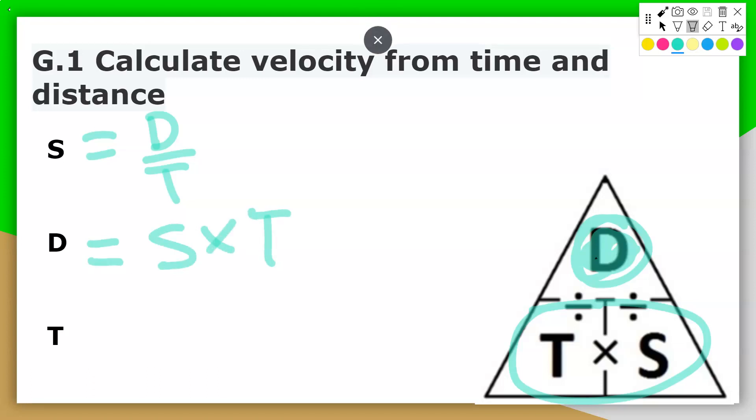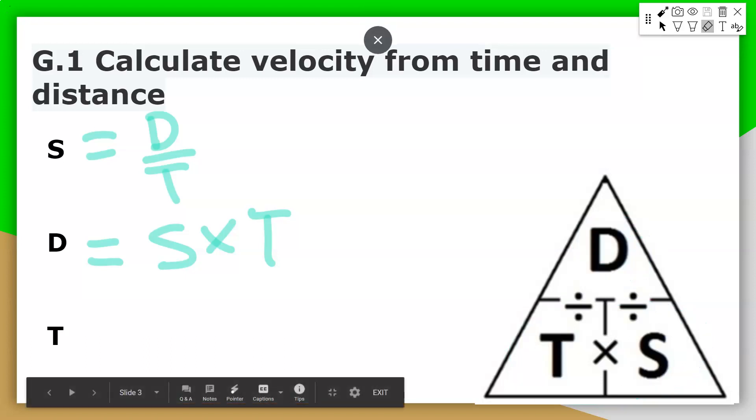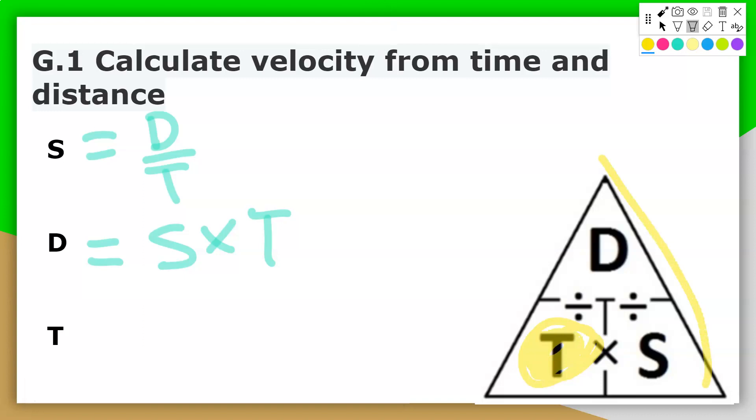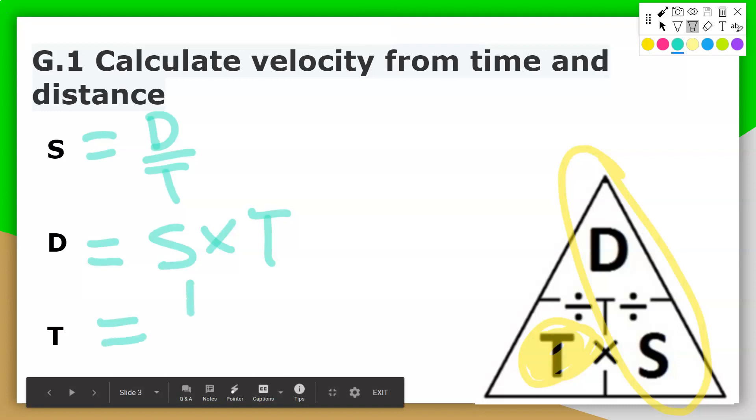And last but not least, we need to solve for time. You cover up the T, and what's left is what we solve for. D is on top, S is on bottom. So that means time is equal to distance divided by speed.